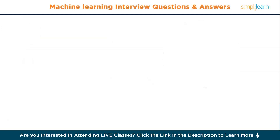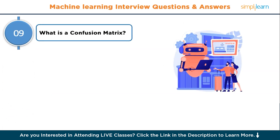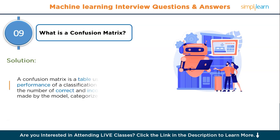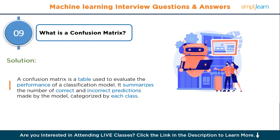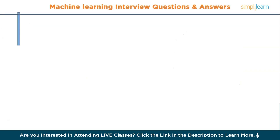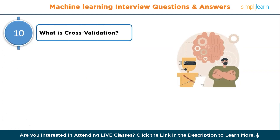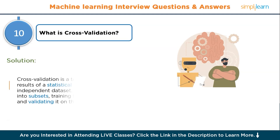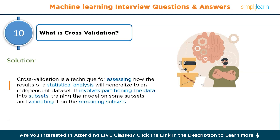Question number nine: what is a confusion matrix? A confusion matrix is a table used to evaluate the performance of a classification model. It summarizes the number of correct and incorrect predictions made by the model, categorized by each class. Question number ten: what is cross-validation? Cross-validation is a technique for assessing how the results of a statistical analysis will generalize to an independent dataset. It involves partitioning the data into subsets, training the model on some subsets, and validating it on the remaining subsets.